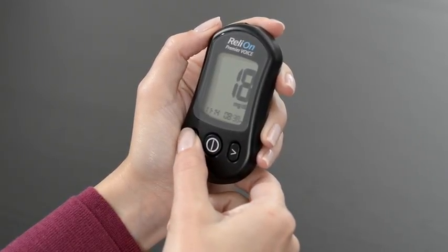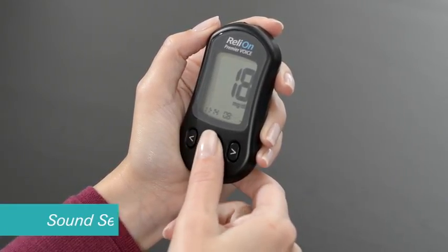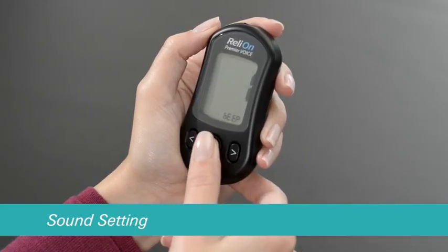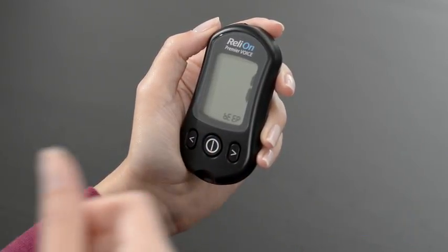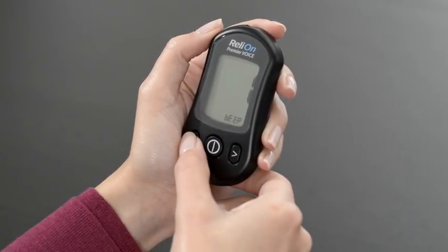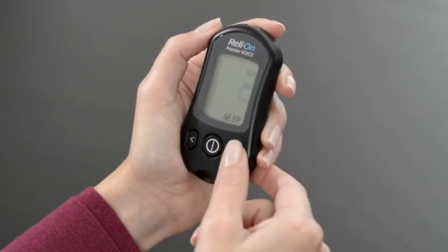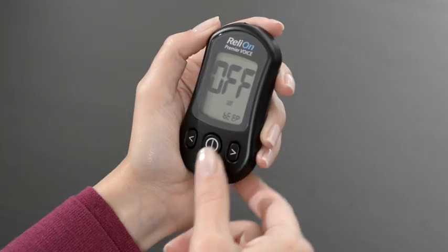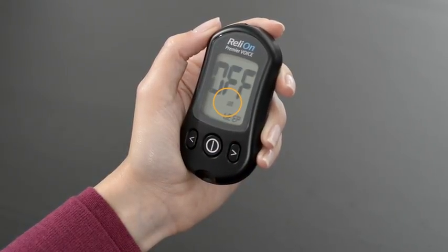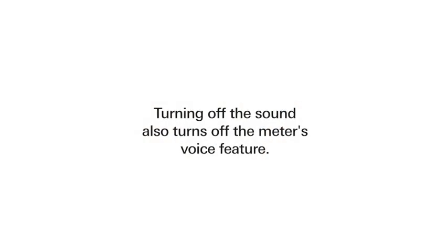Then press the center button to proceed to the sound setting. Use the left or right arrow buttons to set the volume and turn the sound on or off. When the sound is turned off, a mute symbol will be displayed. Turning off the sound also turns off the meter's voice feature.